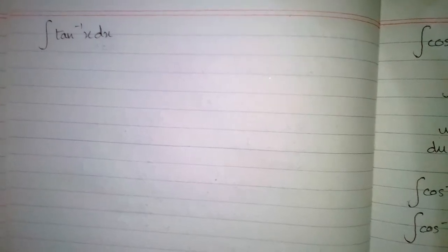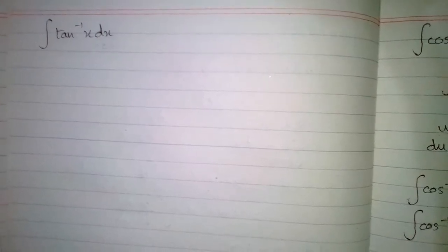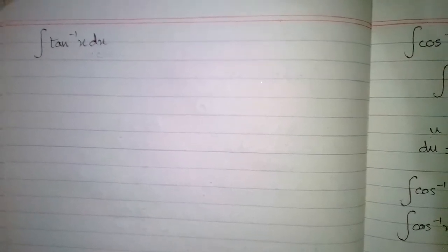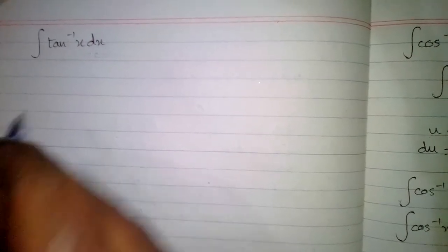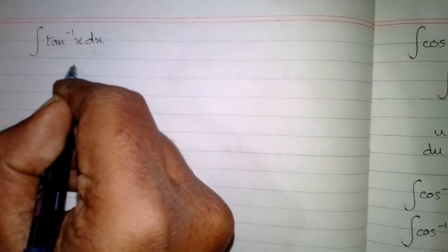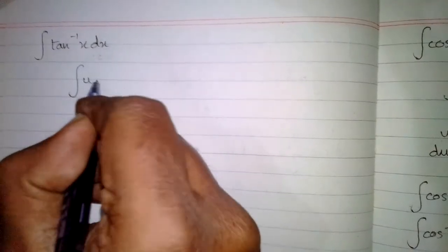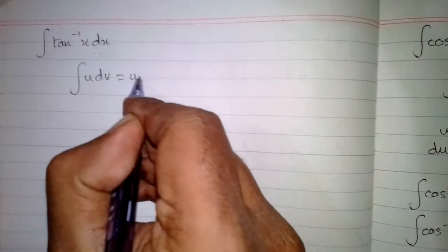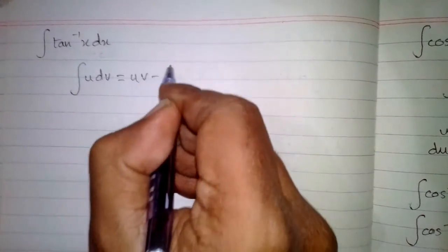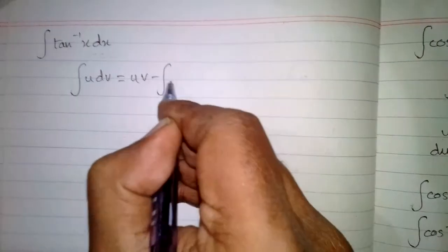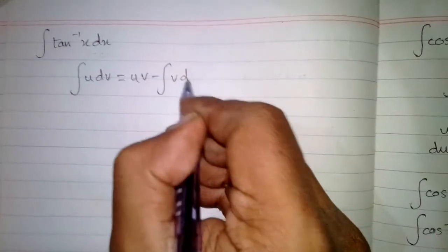In this video we will find the integral of tan inverse x with respect to x. In order to find the integral of this function we will use integration by parts, which states that the integral of u dv is equal to uv minus the integral of v du.